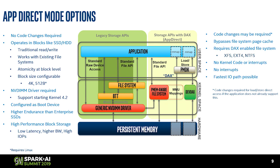Persistent Memory is exposed to the application through the file system, using the same normal interfaces as storage. You can create a file system, but it has to be a Persistent Memory-aware file system — currently XFS, EXT4, and NTFS. You can use normal read-write syscalls, but to avoid going through the kernel, since Persistent Memory behaves like DRAM for accesses, we can use normal load/store semantics and don't have to go through the kernel.